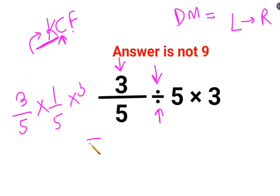So the answer for this question is supposed to be 3 multiplied by 3 is 9 divided by 5 by 5. 5 multiplied by 5 is 25. So the answer for this question is supposed to be 9 by 25.